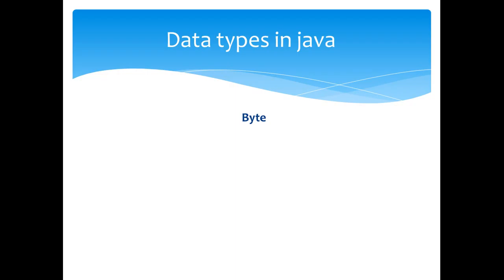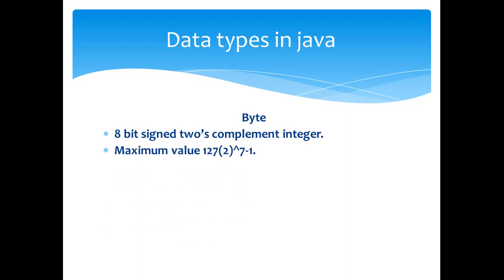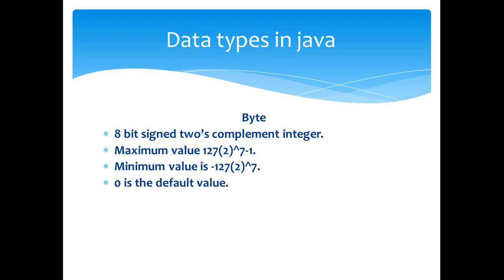Now we are going to look at each of these primitive types separately. The first one is the byte type. It is an 8-bit signed two's complement integer. The maximum value is 127, which is 2 raised to 7 minus 1. The minimum value is minus 128, which is 2 raised to 7. Zero is the default value. Example: byte a is equal to 100, byte b is equal to minus 100.